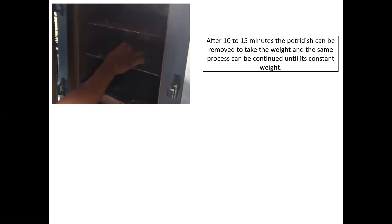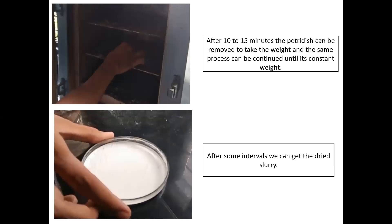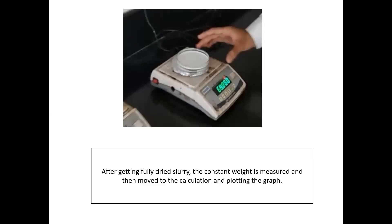After every 10 to 15 minutes, the petri dish is removed to record the weight, and this process continues until a constant weight is obtained. After some intervals, the slurry is fully dried and the constant weight is measured. Then the calculation part begins — calculating percentage moisture content and drying rate, and plotting the graph with percentage moisture content on the x-axis and drying rate on the y-axis.